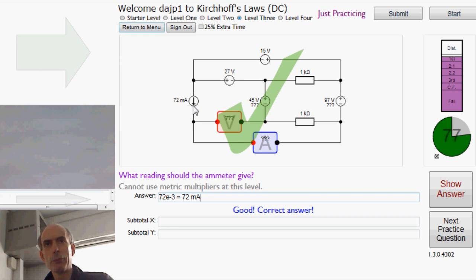then all of the 72 milliamps flowing down here must be flowing through the ammeter. And it's from the red to the black, so it will be a positive current that the ammeter will register.